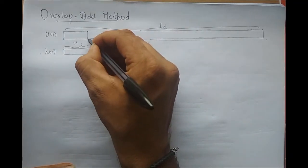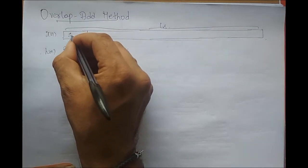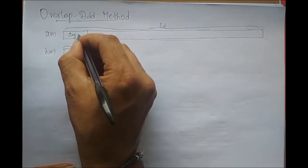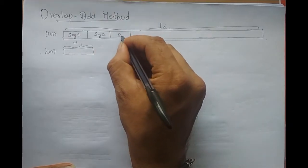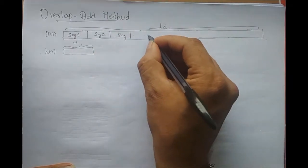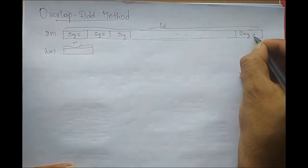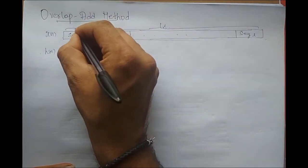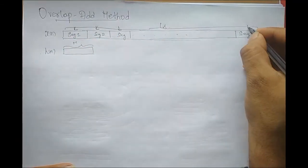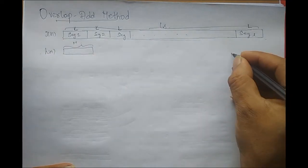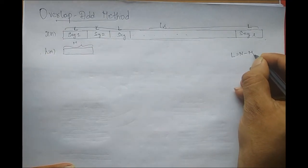So, what we do is cut this lengthy sequence into individual segments — segment 1, segment 2, segment 3, and so on up to segment L. The length of each segment is capital L, where L equals N minus M plus 1.